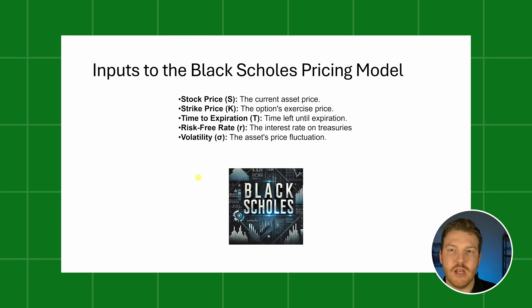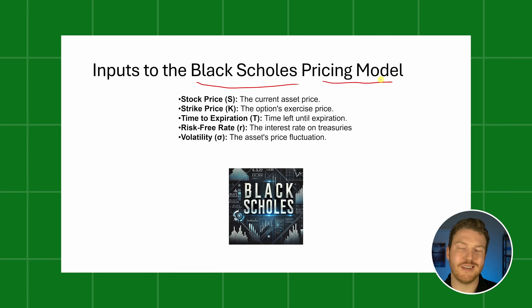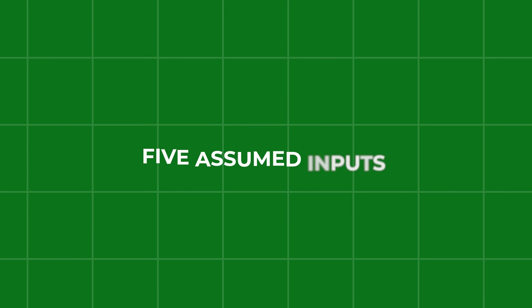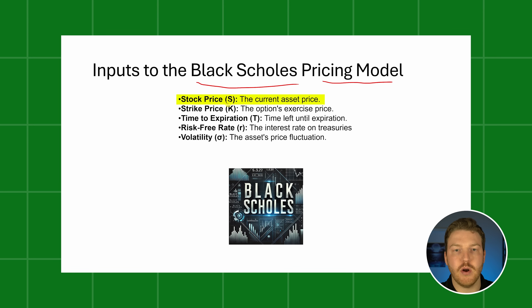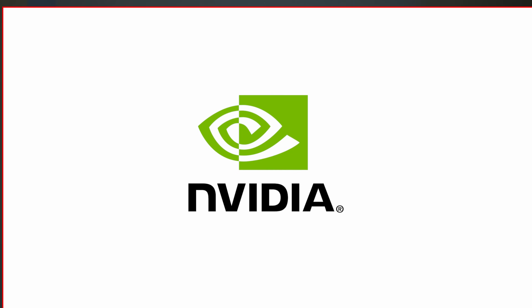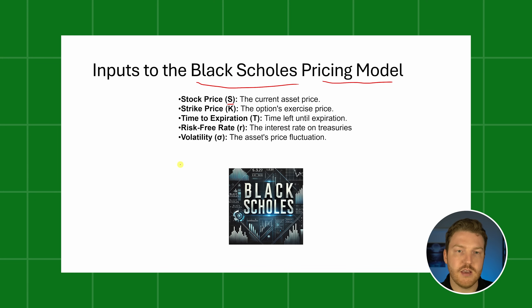When we're talking about implied volatility, this is often derived from the Black-Scholes option pricing model, which is the most popular option pricing model. In the Black-Scholes model, there are basically five assumed inputs. The first is the stock price, denoted as S, which is the current asset price. So if we were looking at a specific stock like NVIDIA, it would just be the current price of NVIDIA's stock, passed in as an input to the Black-Scholes model.